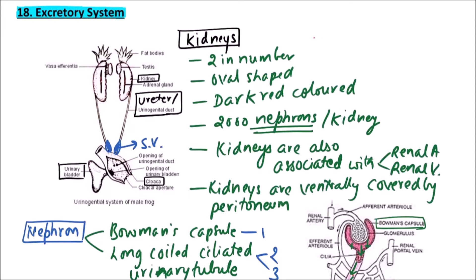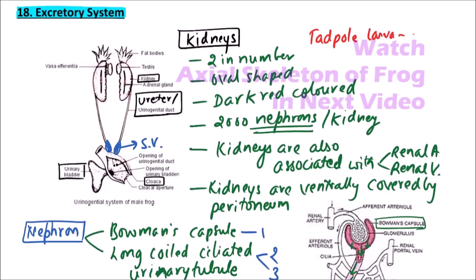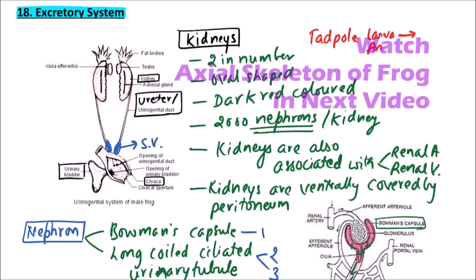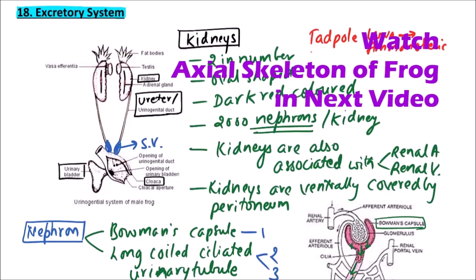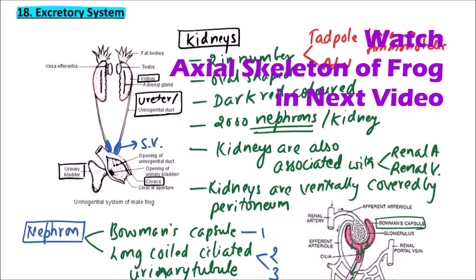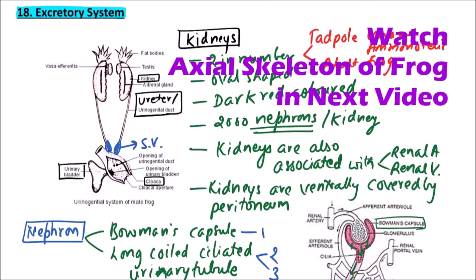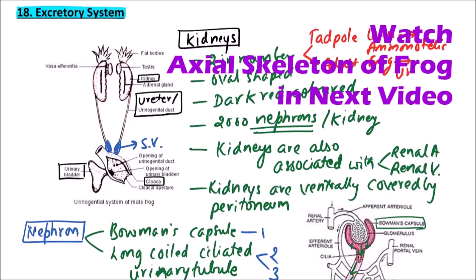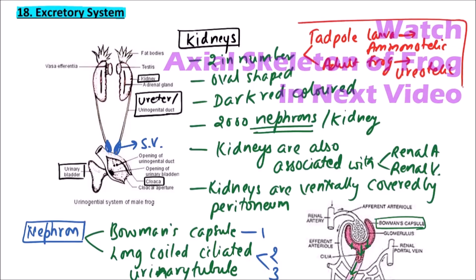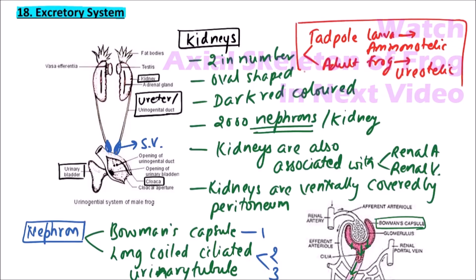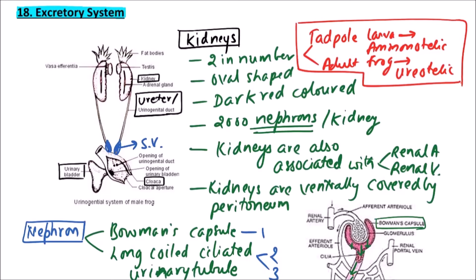It's important to remember that the tadpole larva of the frog is ammonotelic and aquatic in nature, while the adult frog, which is terrestrial, is ureotelic. Thanks for watching this video.